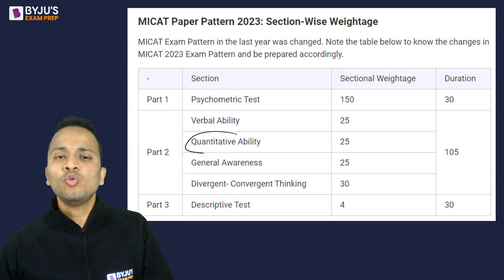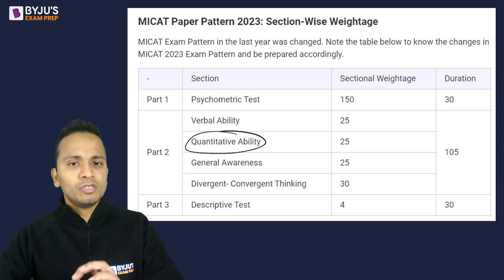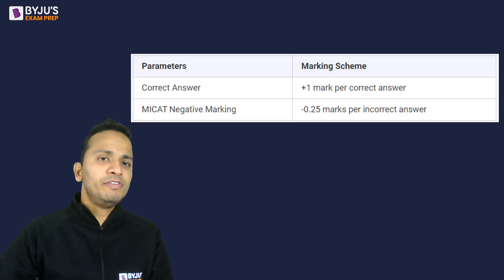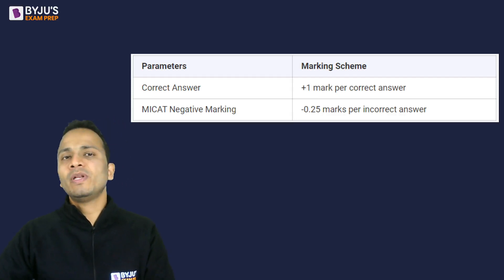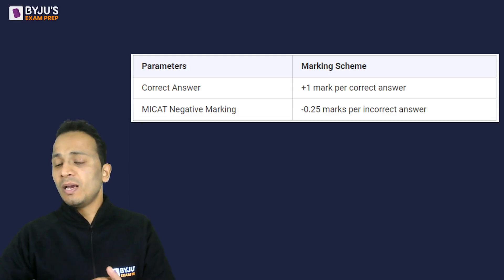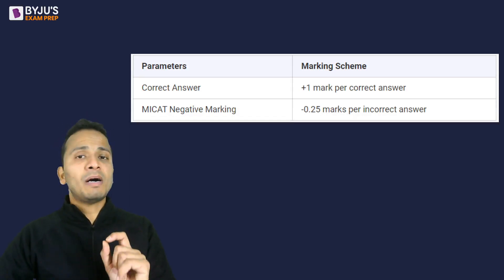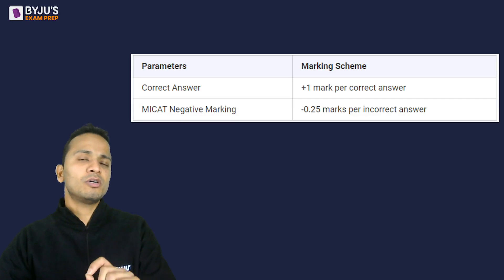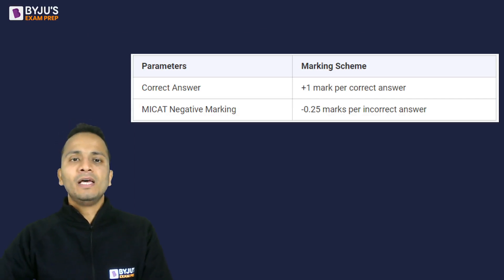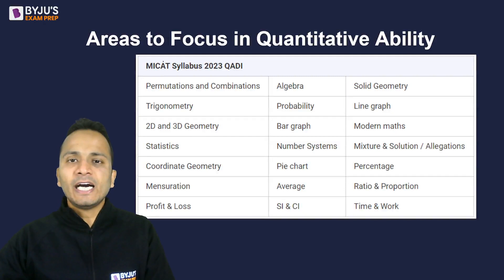Now we'll talk in detail about the QA section of part two. The marking scheme of this paper is: for every correct answer you will get plus one, and for every wrong answer you will get minus 0.25. This marking scheme holds true for only the second part.